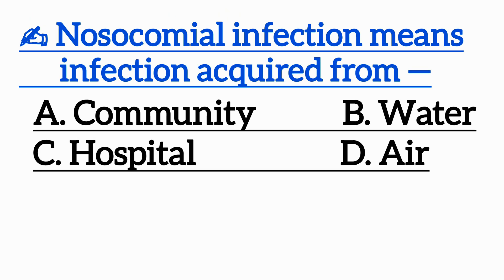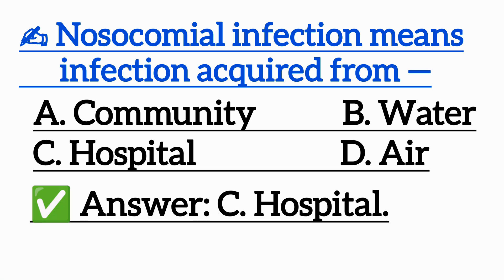Question 3: Nosocomial infection means infection acquired from — Option A: Community, Option B: Water, Option C: Hospital, Option D: Air. Correct answer is Option C: Hospital.